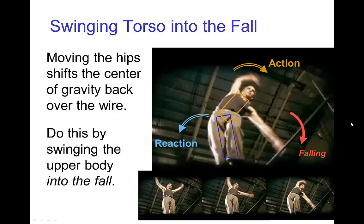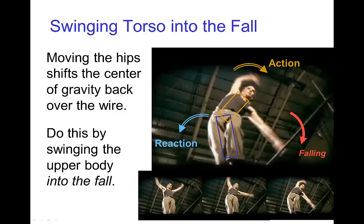When even more recovery is needed, the tightrope walker needs to shift their hips rapidly, and that can be done by throwing the whole upper body into the fall. In these poses, we see this tightrope walker throwing his upper body and also rotating his arms in the direction of the fall. That action allows his lower body to rotate in the other direction — in this case counter-clockwise — allowing the hips to shift back over the wire, repositioning the center of gravity over the wire.